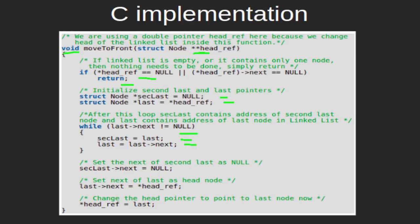Once we have traversed the whole linked list, we update the next of the second last node to null, and we also update the next of the last node with the head of the given linked list. Finally, the head of the linked list is updated with the last node of the given linked list, and we get the modified linked list with the last node as the front node.